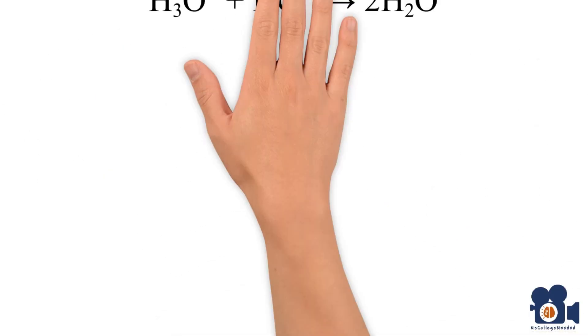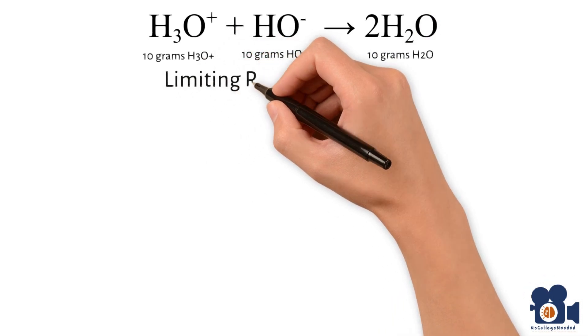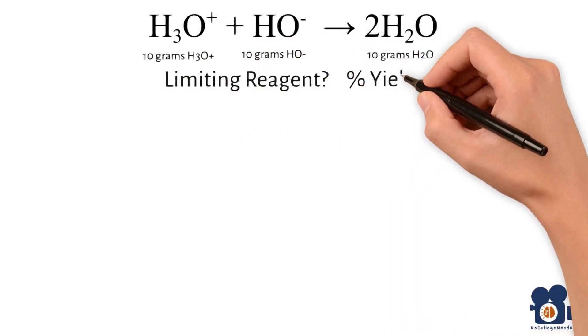Now let's go through a full example with the neutralization reaction of H₃O⁺ + HO⁻ → 2H₂O. You start with 10 grams of both H₃O⁺ and HO⁻ and produce 10 grams of H₂O. In this, what is your limiting reagent and percent yield?